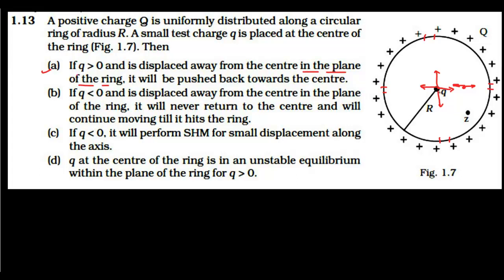When the negative charge is displaced from the center, the closer element exerts a greater attractive force, so the net force is away from the center — it keeps moving toward the ring. This means the negative charge is in unstable equilibrium at the center when displaced in the plane. Option B is also correct.